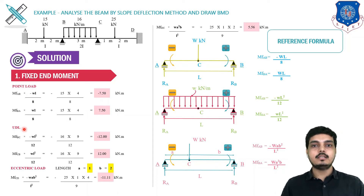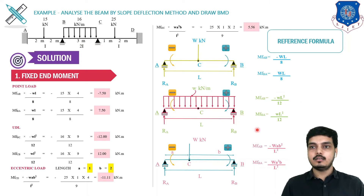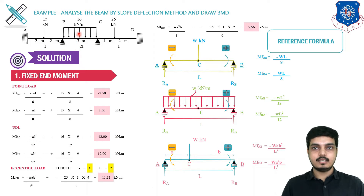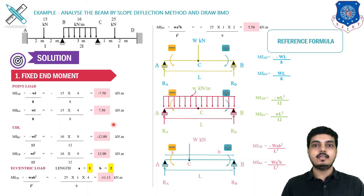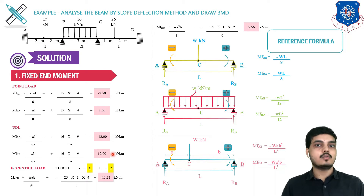For UDL the formula is WL²/12. MF_BC is negative and MF_CB is positive. W = 16 kN/m, L = 3 m, so L² = 9. Thus MF_BC = −16 × 9/12 = −12 kNm, and MF_CB = +12 kNm.